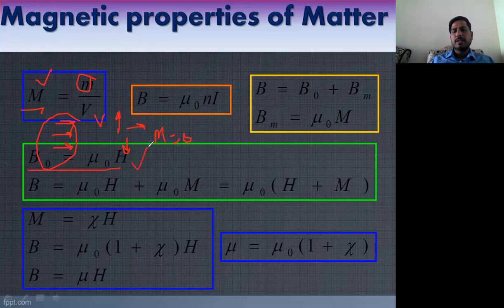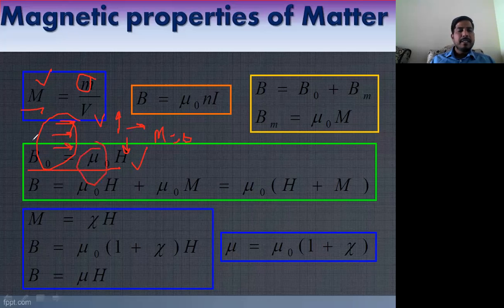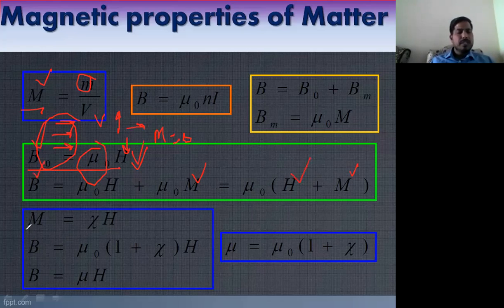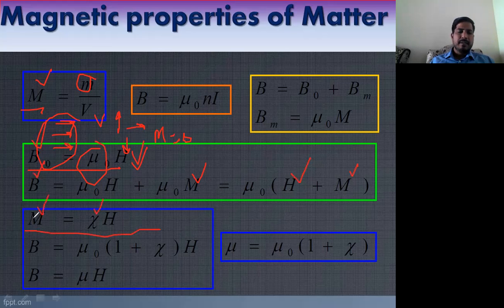The relation between B and H is B = μ₀H. This is a very important equation. μ₀ is permeability, B is induction, H is intensity. Also, B = μ₀H + μ₀M, so B = μ₀(H + M). Here M = χH, so M is related to susceptibility chi.